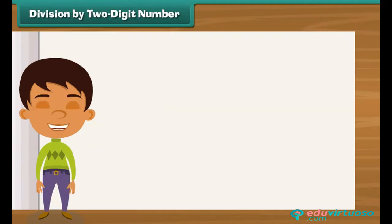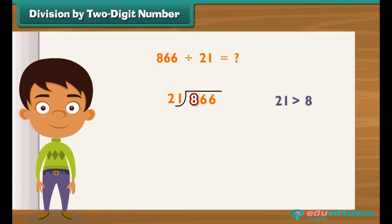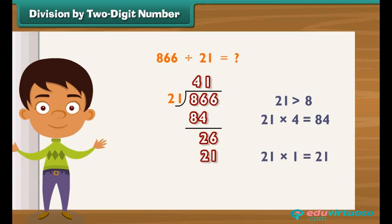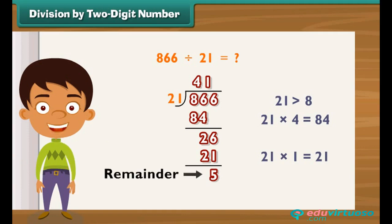Division by two-digit number. Divide 866 by 21. Since 8 is less than 21, divide 86 by 21. 21 into 4 is equal to 84. Write 4 above 866 and subtract 84 from 86 to get 2. Bring 6 down to form 26. Now, divide 26 by 21. 21 into 1 is equal to 21. Place 1 above 866 next to 4 and subtract 21 from 26 to get 5. The remainder is 5. Thus, 866 divided by 21 is 41 with remainder 5.